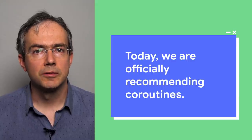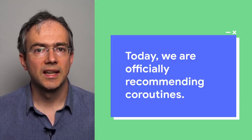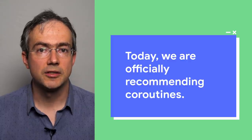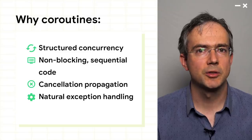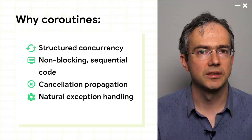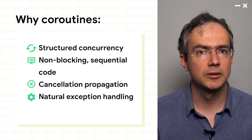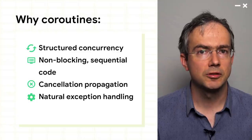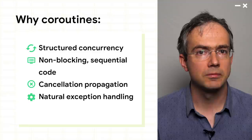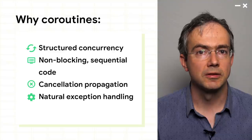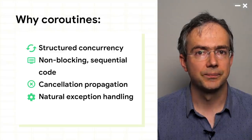Today, we're officially recommending coroutines as the way to do asynchronous programming in Kotlin. And if you haven't adopted Kotlin yet and are struggling with asynchronous programming, this is another great reason to take a closer look at Kotlin. Coroutines are a particularly good fit for mobile applications running on Android. Structured concurrency helps developers scope the work to the application lifecycle and prevent memory leaks. Callback-free code is easier to read and less error-prone, while built-in support for cancellation and natural exception handling helps ensure error cases are treated gracefully.